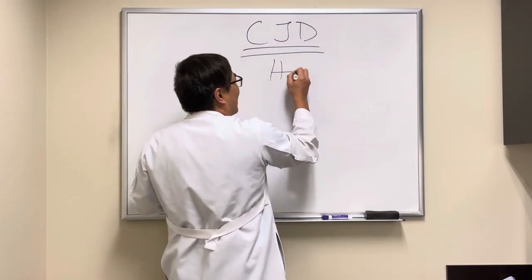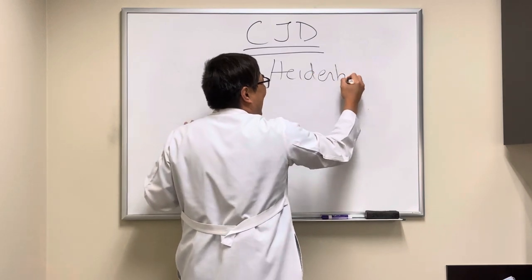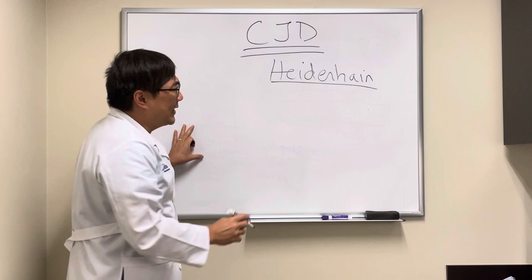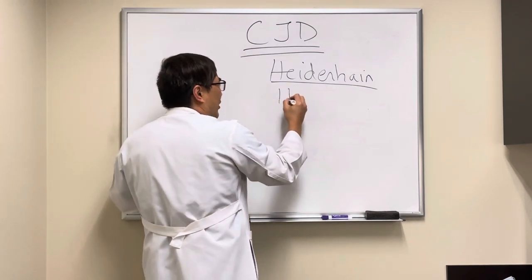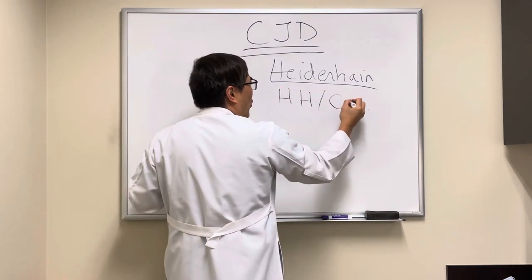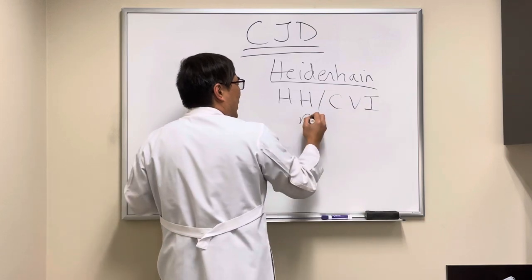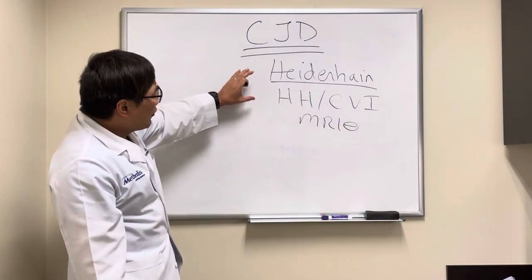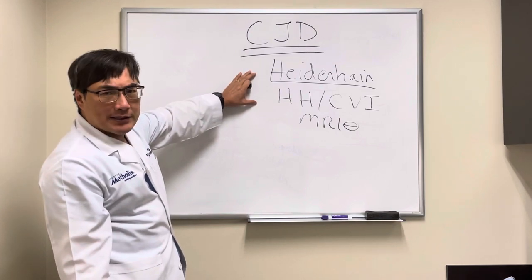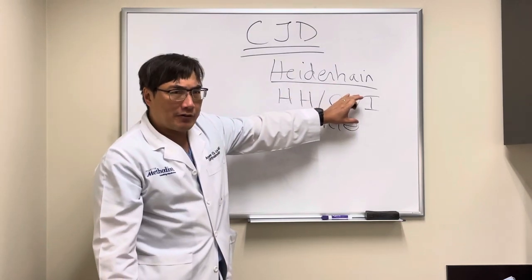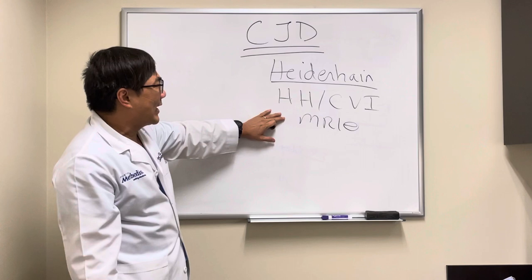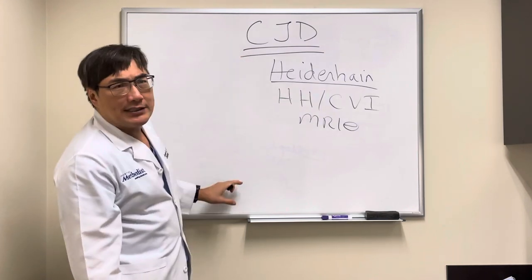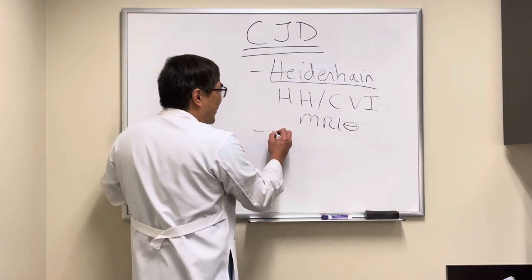CJD can come to neuro-ophthalmology as the Heidenhain variant. The Heidenhain variant of CJD presents as an unexplained homonymous hemianopsia or cortical visual impairment, and often the MRI scan is initially normal. So when we have a rapidly progressive homonymous hemianopsia or rapidly progressive cortical visual impairment with a negative MRI over months, you really should be thinking about CJD and the Heidenhain variant.